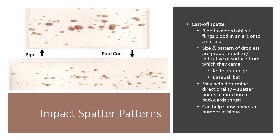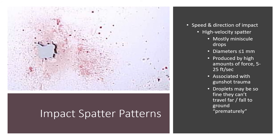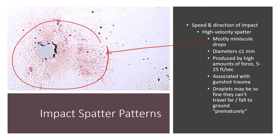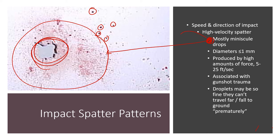The spatter looks different based on whether someone was impacted at high velocity versus low velocity. High velocity spatter, like from gunshots, where the bullet is traveling extremely quickly, will have mostly minuscule drops — almost more like a haze, with very few individual droplets. They're produced by high amounts of force. Because they're so fine and so light, they often won't even be able to travel the full distance the bullet travels. Instead, they lose speed quickly against air resistance and fall and land closer to the source.